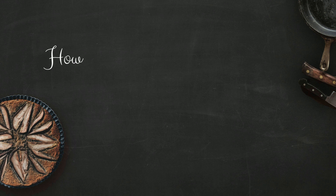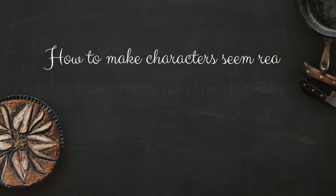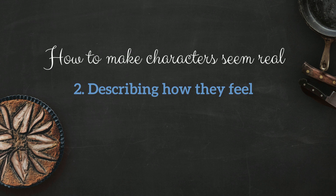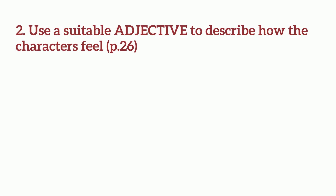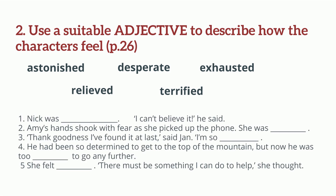Another way to make your characters seem alive is by describing how they feel. This can be done by using adjectives. Activity 2, page 26: use a suitable adjective to describe how the characters feel. The adjectives are: astonished, relieved, desperate, terrified, exhausted.